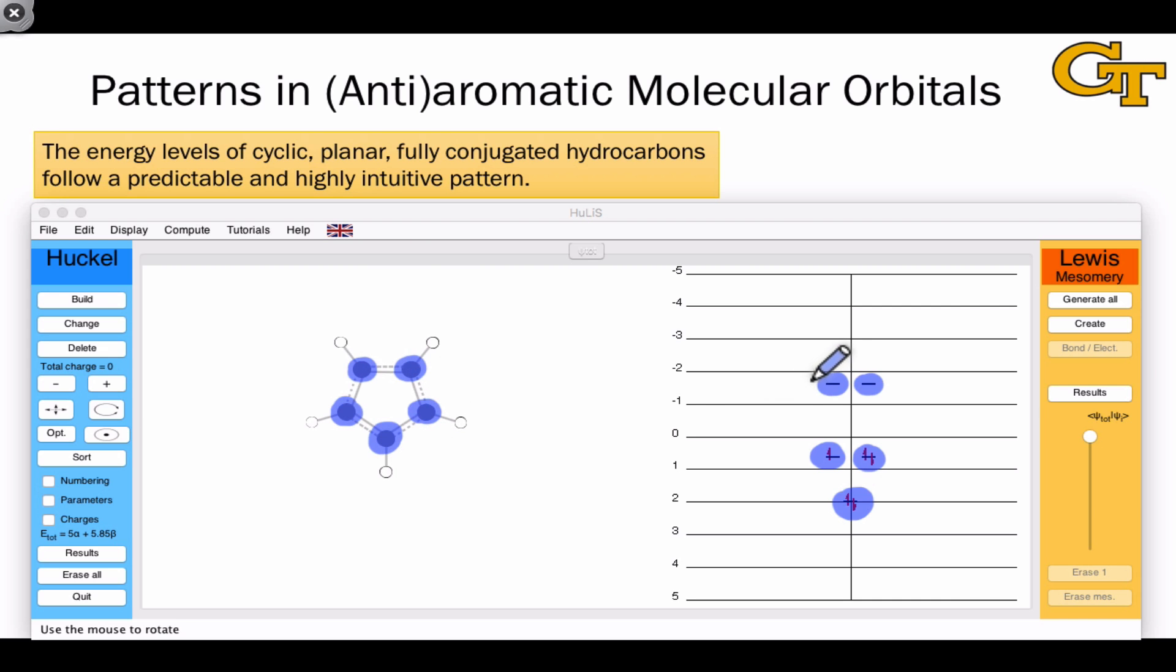This correspondence between the way the energy levels are laid out on the orbital energy diagram and the molecular structure suggests a relatively simple mnemonic for going from the molecular structure of a cyclic, fully conjugated hydrocarbon to its orbital energy diagram.